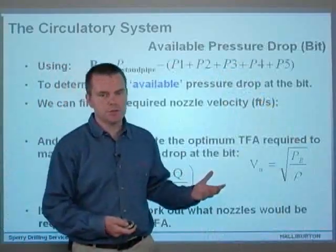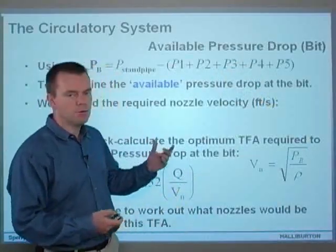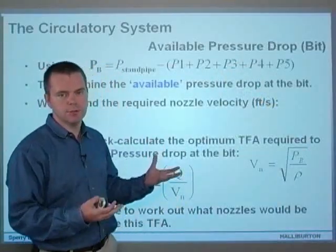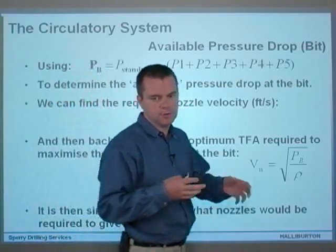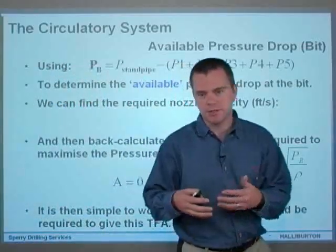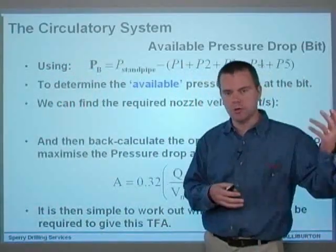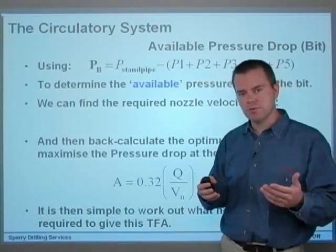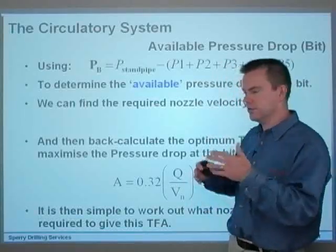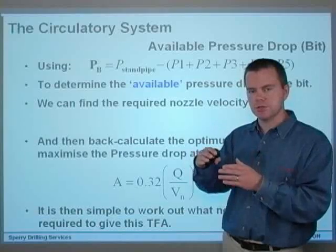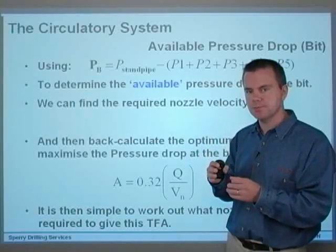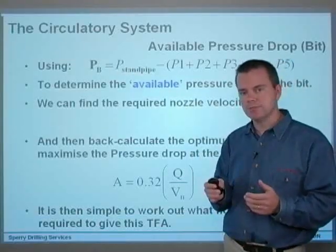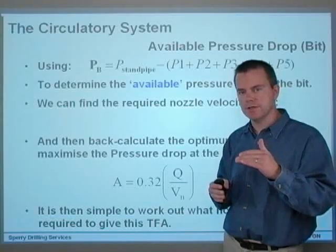That was the bit pressure drop equation. You can also work out what the available bit pressure drop is, so you can work out what jets you could actually put on your bit without blowing the pop-offs on the standpipe pressure. What we're looking at here is that Pc, your total circulating pressure or standpipe pressure, is going to have a maximum value.